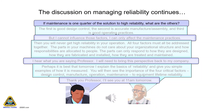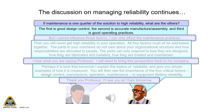If maintenance is one-quarter of the solution to high reliability, what are the others? The first is good design control, the second is accurate manufacture and assembly, and the third is good operating practices.